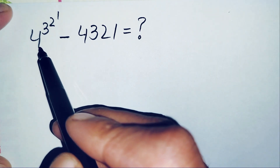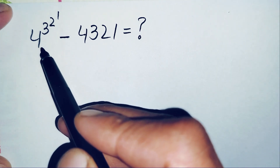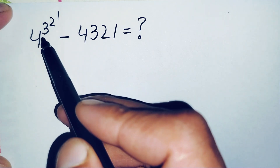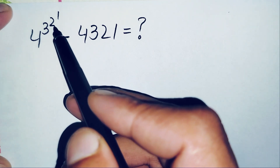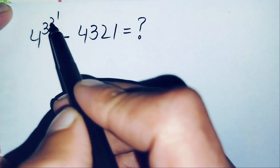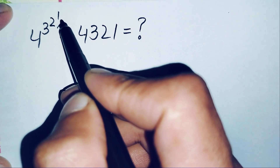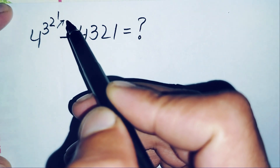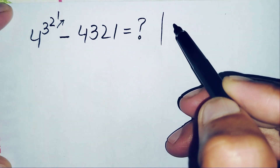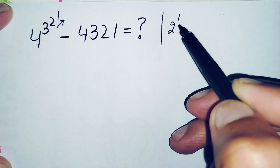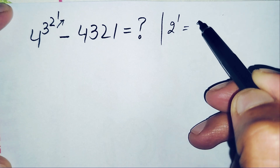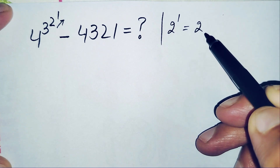First of all, we will try to solve the powers of this number. When we have stacked powers like this, we solve the powers from top to bottom. So first we will solve 2 raised to power 1. Remember that any number raised to power 1 is always equal to that number itself, so 2 raised to power 1 is equal to 2.